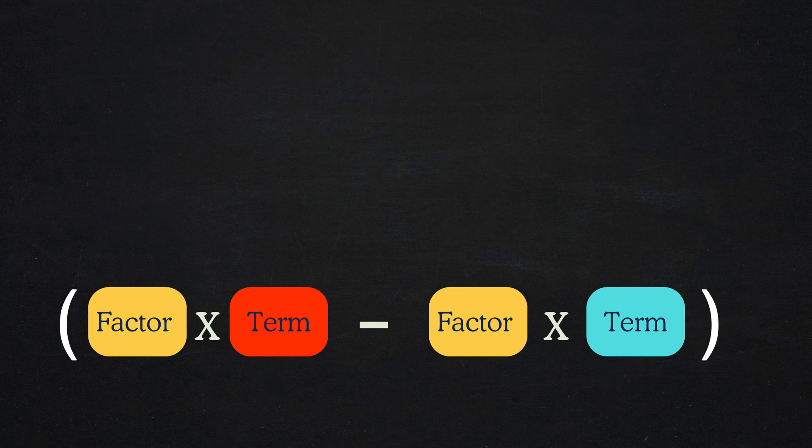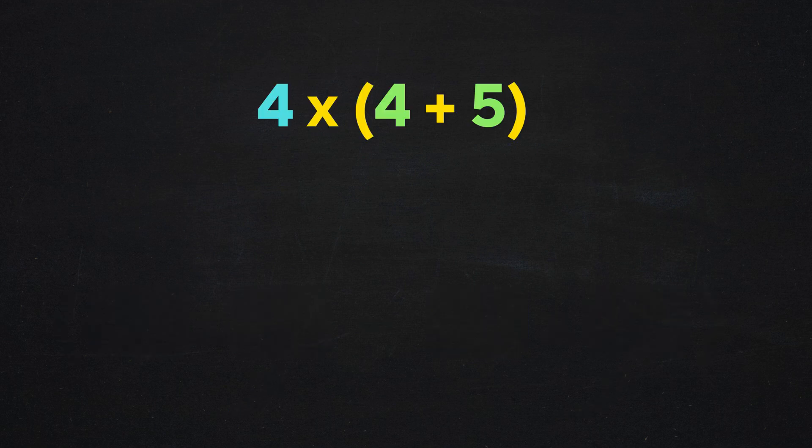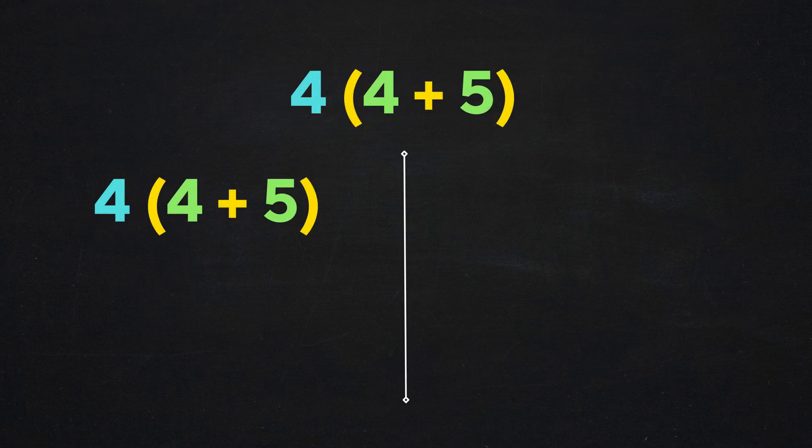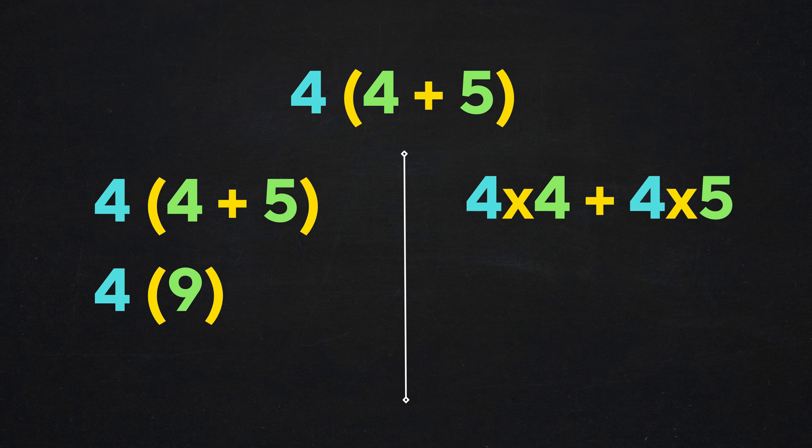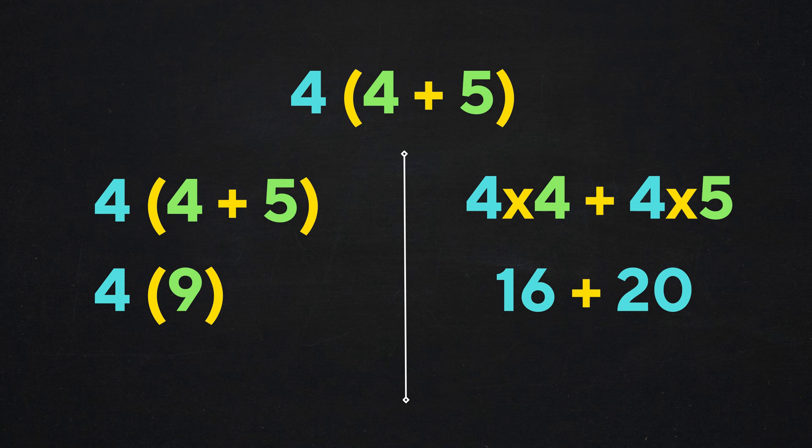To refresh your memory from arithmetic, imagine you have 4 times the sum of 4 plus 5. You can simplify it in two different ways. You can either first simplify inside the parentheses or use the distributive property to distribute the factor of 4 to each part of the sum. Both approaches will give you the same result.